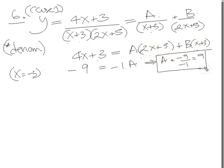That's that bit done there. So A is 9. Now we'll put in the other slightly more awkward value, which is minus 5 over 2. And then this bracket will disappear. So put in that. What do we get? We get 4 lots of x, which is minus 5 over 2, plus 3, equals minus 5 over 2, this will disappear. Because 5 over 2 times 2 is minus 5, plus 5 is 0, 0 times A is 0. Plus B.